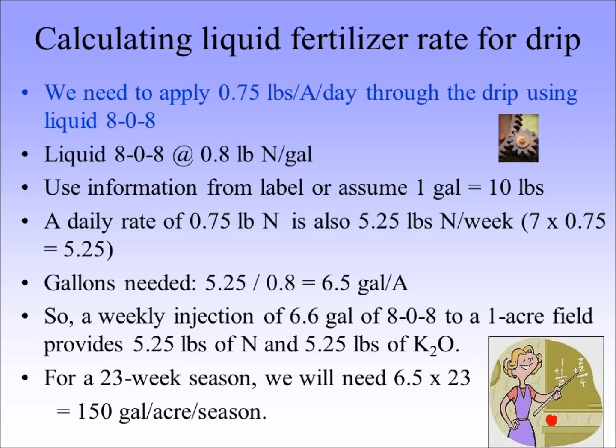A weekly injection of 6.5 gallons of 8-0-8 to a one-acre field provides exactly 5.25 pounds of N and 5.25 pounds of K2O. For strawberry, we target 23 weeks a season, and we're using the highest daily rate — so that's a little excessive, but it puts us on the side of having a little more rather than less. So 6.5 gallons per week times 23 weeks means you'll need 150 gallons per acre per season. If you have 10 acres, you need 10 times more; if 100 acres, 100 times more.